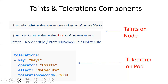The key and value can be any string. The important thing is the effect, which can be either NoSchedule, PreferNoSchedule, or NoExecute. If the effect is NoSchedule, it means a new pod which does not have the toleration will not be scheduled on that particular node. But any pods already running on that node will keep running. If the effect is NoExecute, all pods already running on that node will also be evicted if they do not have the toleration.